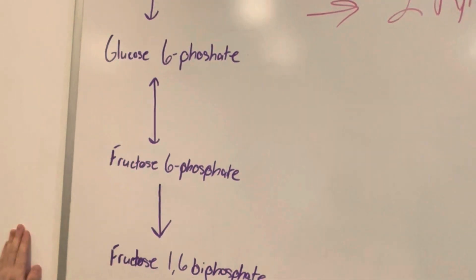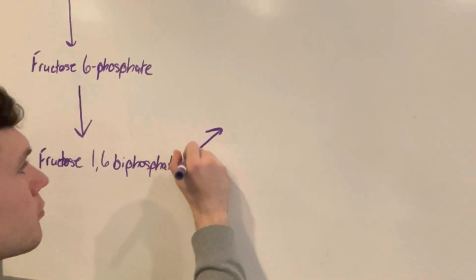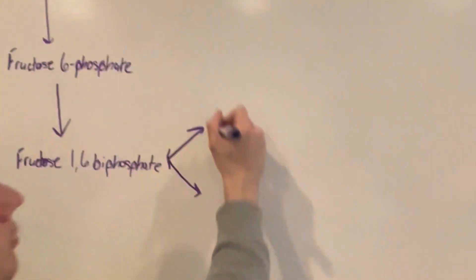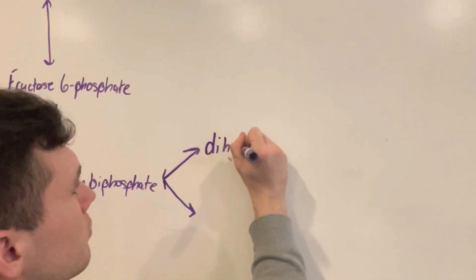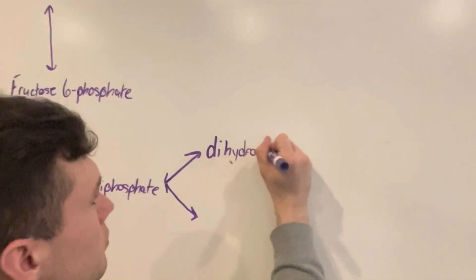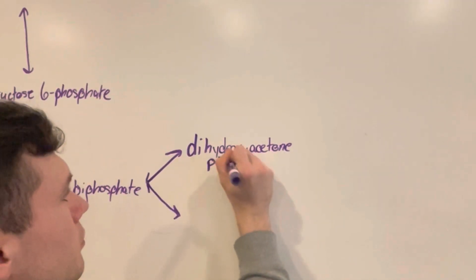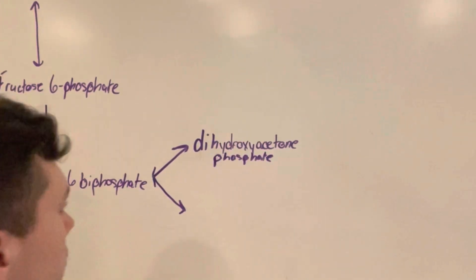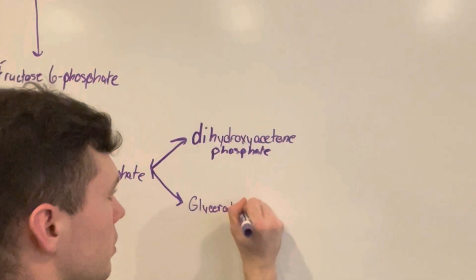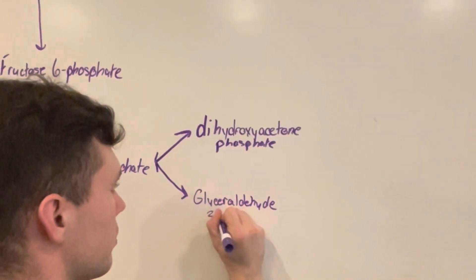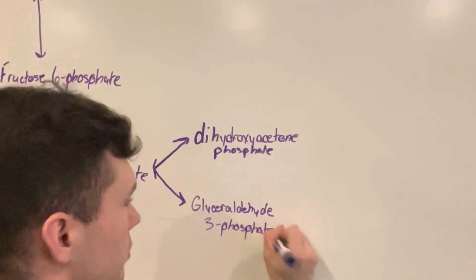This is then split into two different molecules, both reversible into dihydroxyacetone phosphate and the second one is glyceraldehyde-3-phosphate. But the dihydroxyacetone phosphate is transformed into a second glyceraldehyde-3-phosphate.